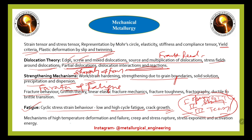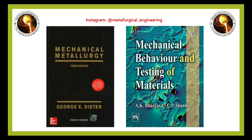High temperature deformation: creep at constant load, mechanisms of high temperature deformation, creep and stress rupture, stress exponent, and activation energy — these are important for Mechanical Metallurgy. The most common book is Mechanical Metallurgy by George E. Dieter. Also, Mechanical Behavior and Testing of Materials by A.K. Bhargava and C.P. Sharma is very good for plastic deformation, dislocation theory, and numerical practice.